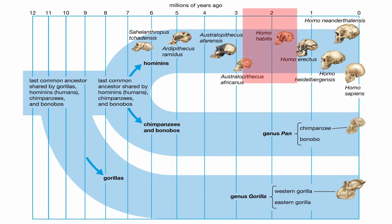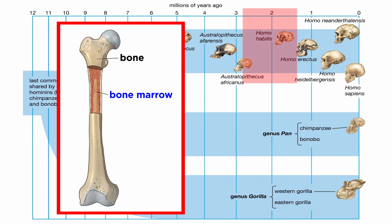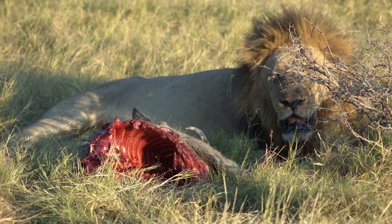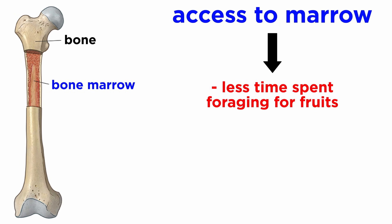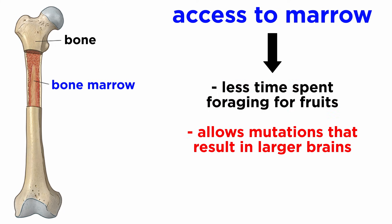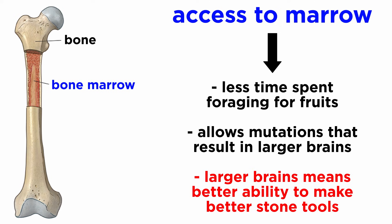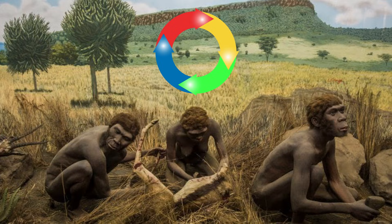Late Australopithecus and early Homo present an interesting possibility: these hominins may have begun by exploiting bone marrow. Bones are easy to find and usually left behind after lions have had their fill of a carcass. Hominins, unlike many other scavengers, could break these bones open using stone tools they had only recently figured out how to make. Access to marrow reduces foraging time and allows natural mutations in favor of larger brains to proliferate rather than die due to expense. Bigger brains allow hominins to innovate, making better tools, exploiting more resources, growing bigger brains — one can quickly see what a feedback loop this creates.